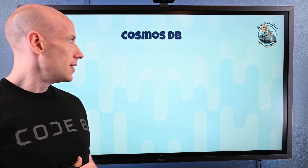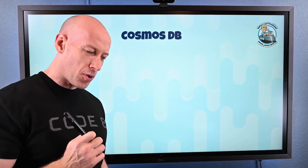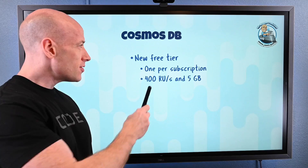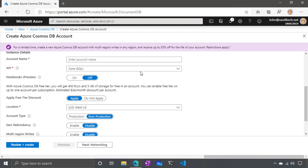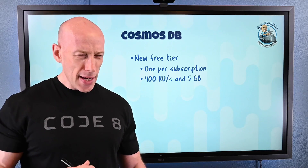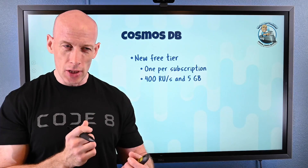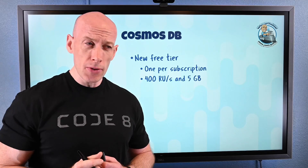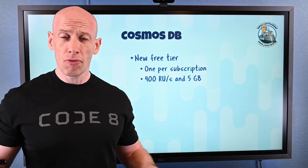Nothing to do with infrastructure, but this is super cool. Cosmos DB has made two pretty major changes. First, there's now a new free tier — not a limited time offer. In your subscription, you can have one instance of a Cosmos DB free tier, which gives you 400 request units and 5 gigabytes of storage. Request units are almost a mystical thing with Cosmos DB — based on how you partition your data and how your queries are structured, operations might use very few RUs or lots of RUs. But now you have 400 RUs freely available all the time.